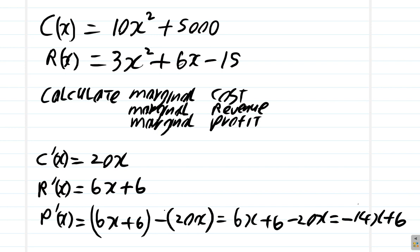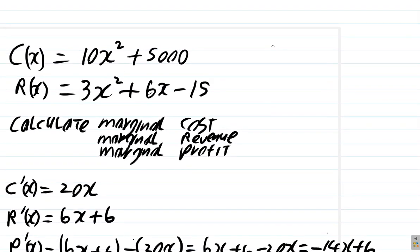Let's look at it another way. We know that the total profit is the total revenue minus the total cost. Suppose we find the total profit first and then differentiate it to find the marginal profit.